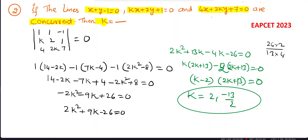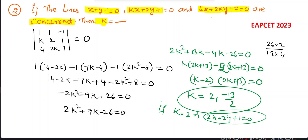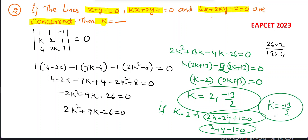Checking k = 2: substituting into the second line gives 2x + 2y + 1 = 0. The first line is x + y - 1 = 0. These two are parallel lines with no point of intersection. Therefore k = 2 is rejected, and k = -13/2 is the required answer.